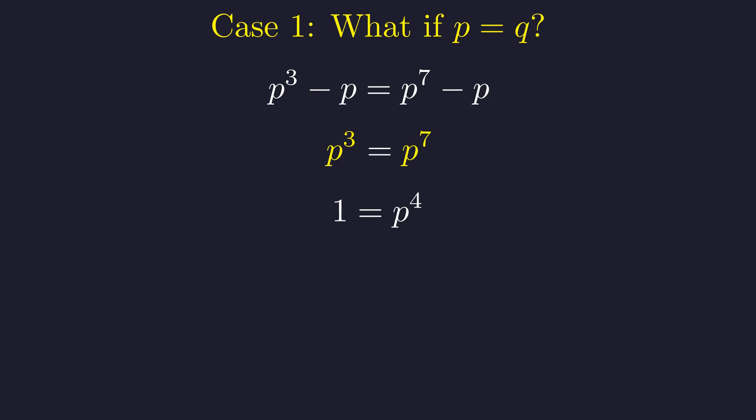This implies that p to the 4th power equals 1. The only positive integer solution is p equals 1, which is not a prime number. Consequently, the case p equals q yields no prime solutions.